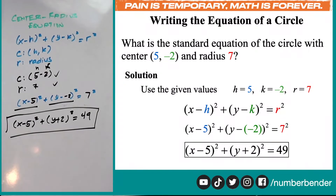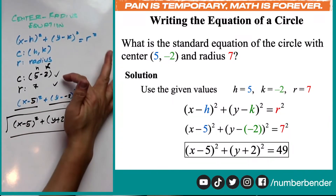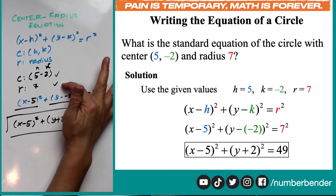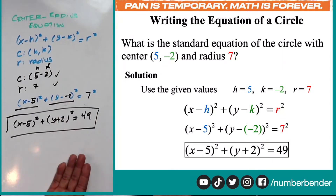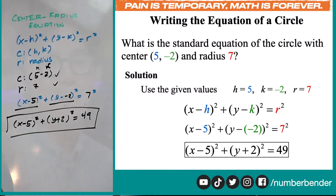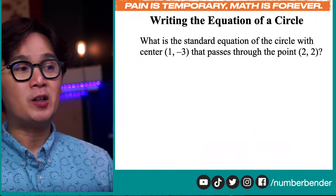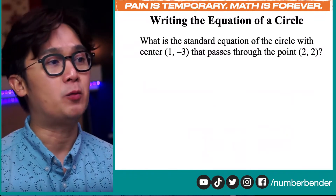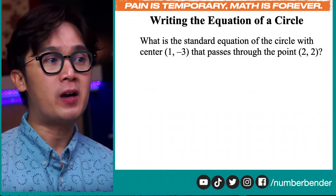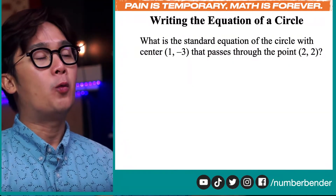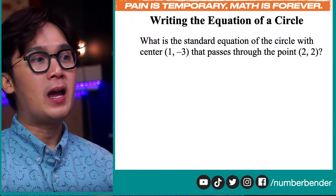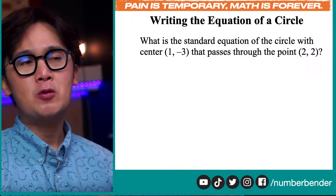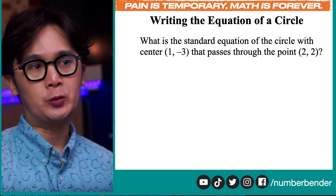It's pretty simple. Again, it's easy when we have the center and the radius given in our problem, and graphing it is also easier with graphing paper. So let's have the second problem: write the standard equation of the circle with a center at 1, negative 3 that passes through the point 2, 2.